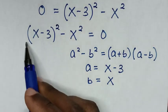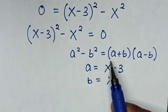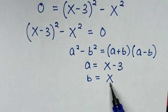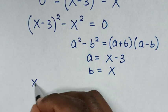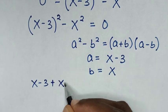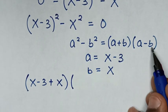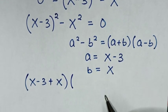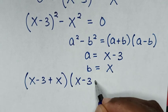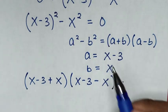In the next step, since this expression is in that form, we substitute: a plus b gives us x minus 3 plus x, and a minus b gives us x minus 3 minus x. So the factored form is x minus 3 plus x, bracket, times x minus 3 minus x, bracket, is equal to 0.